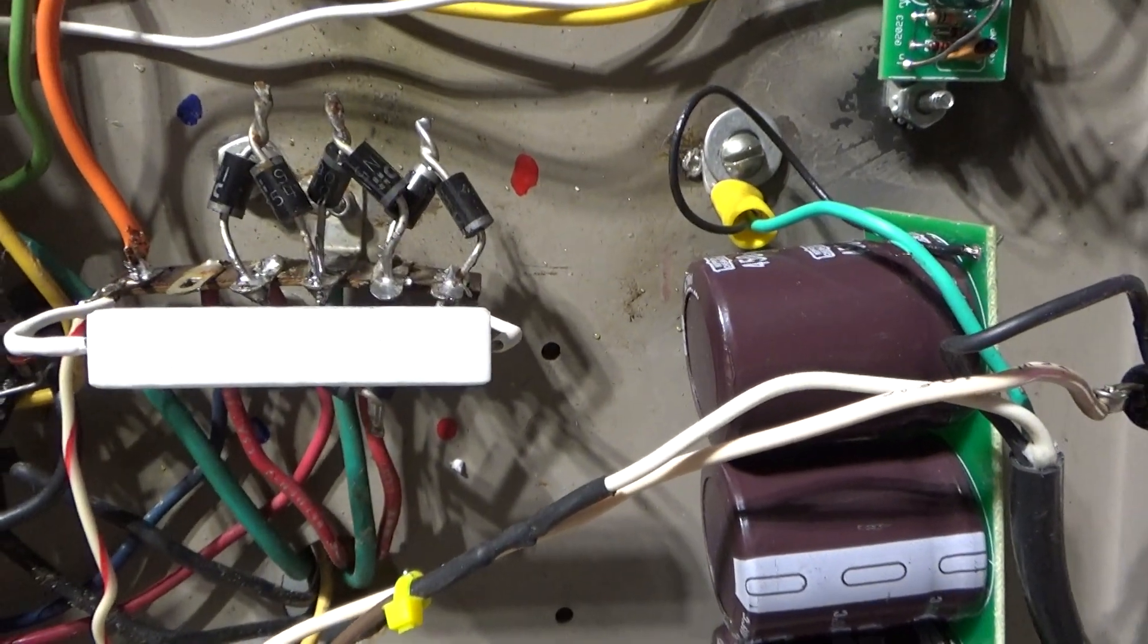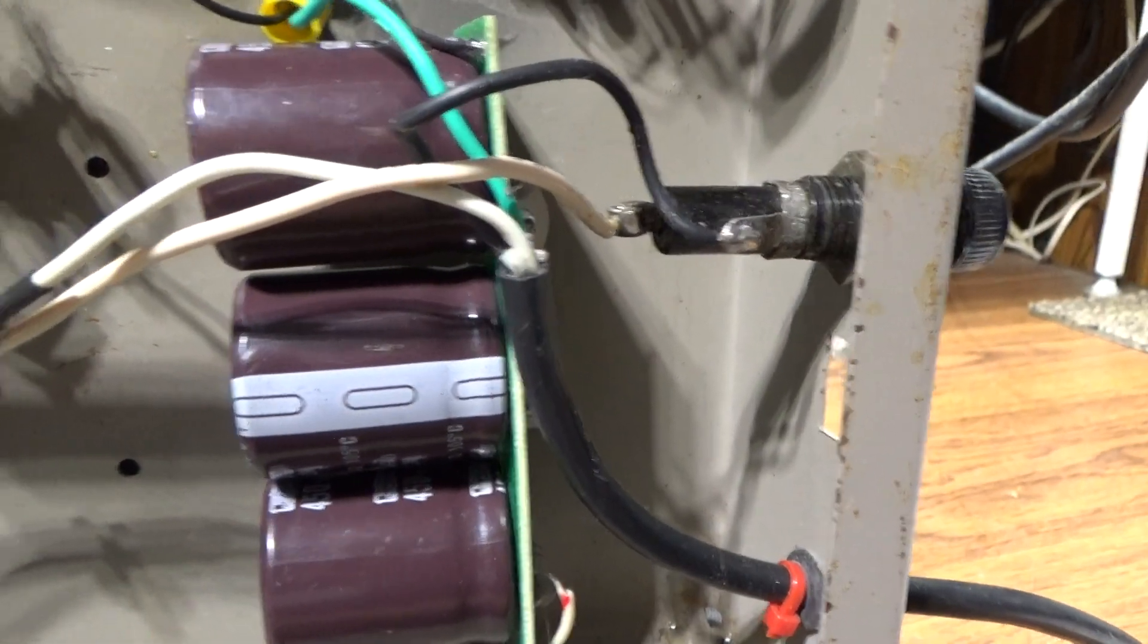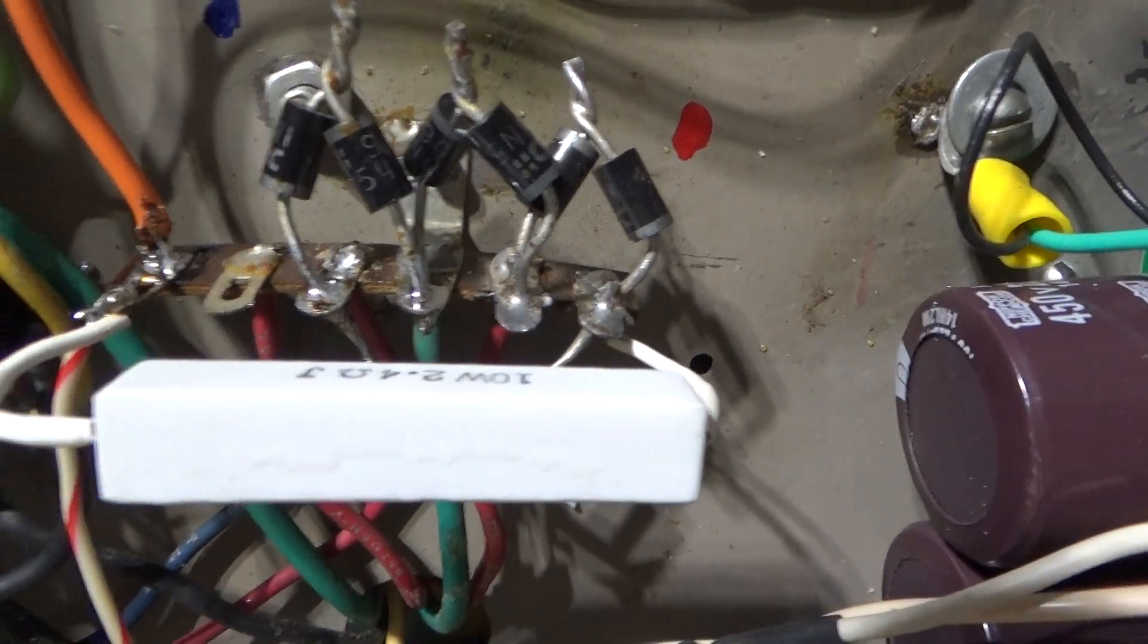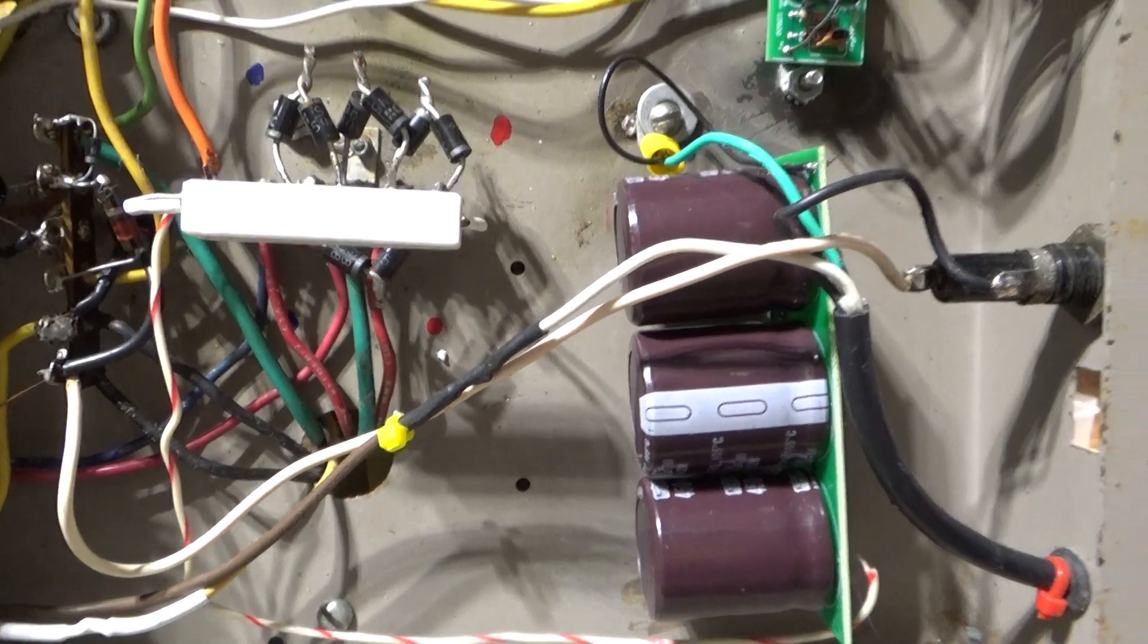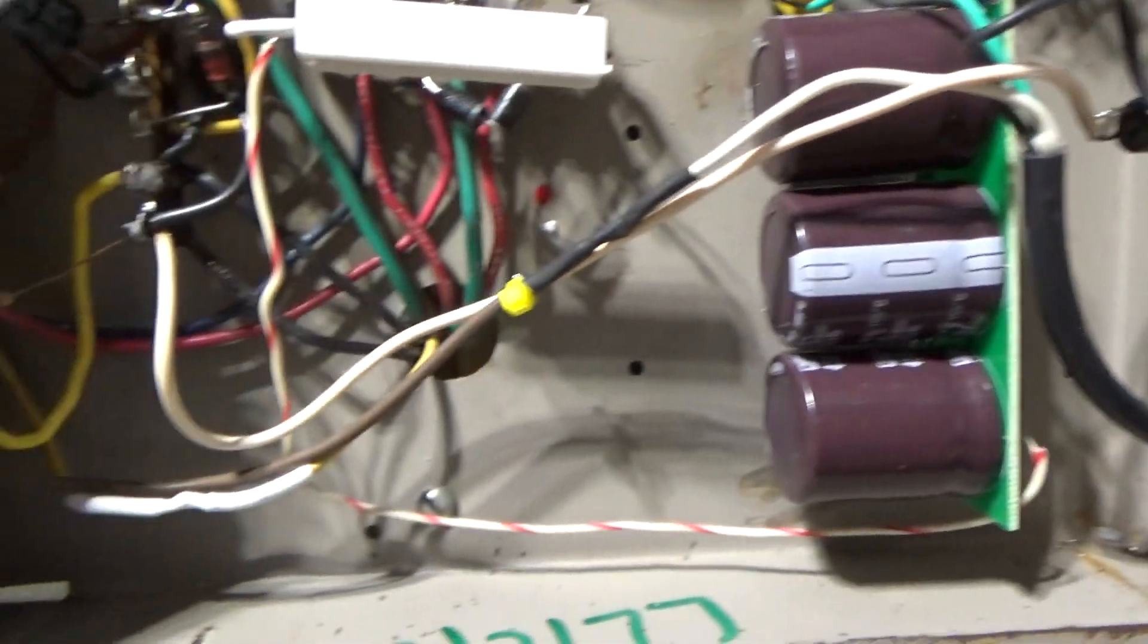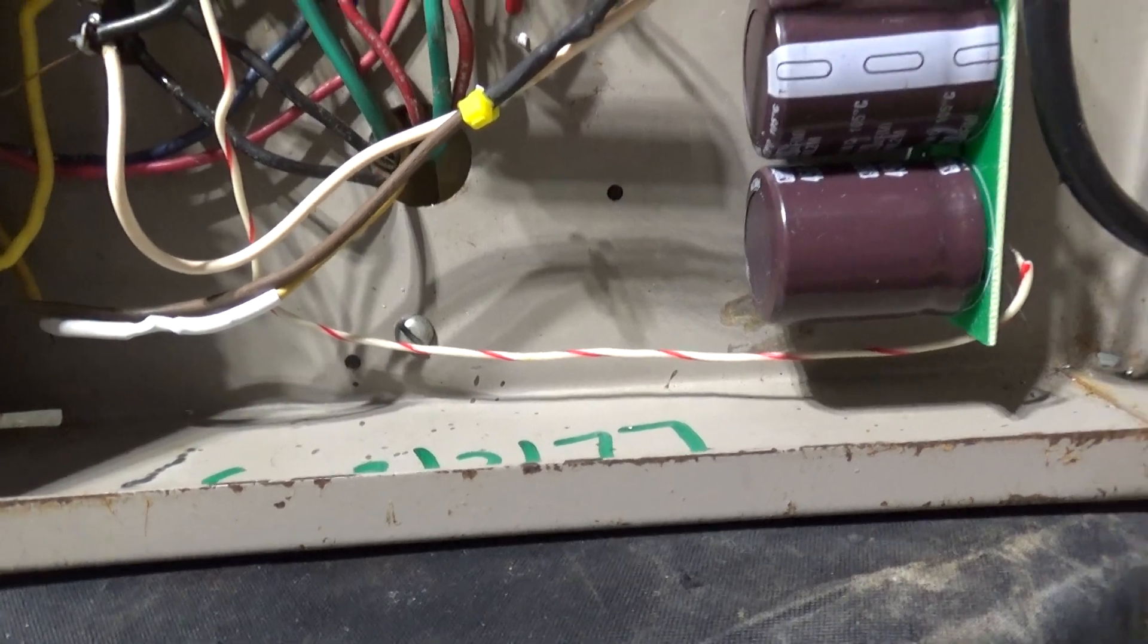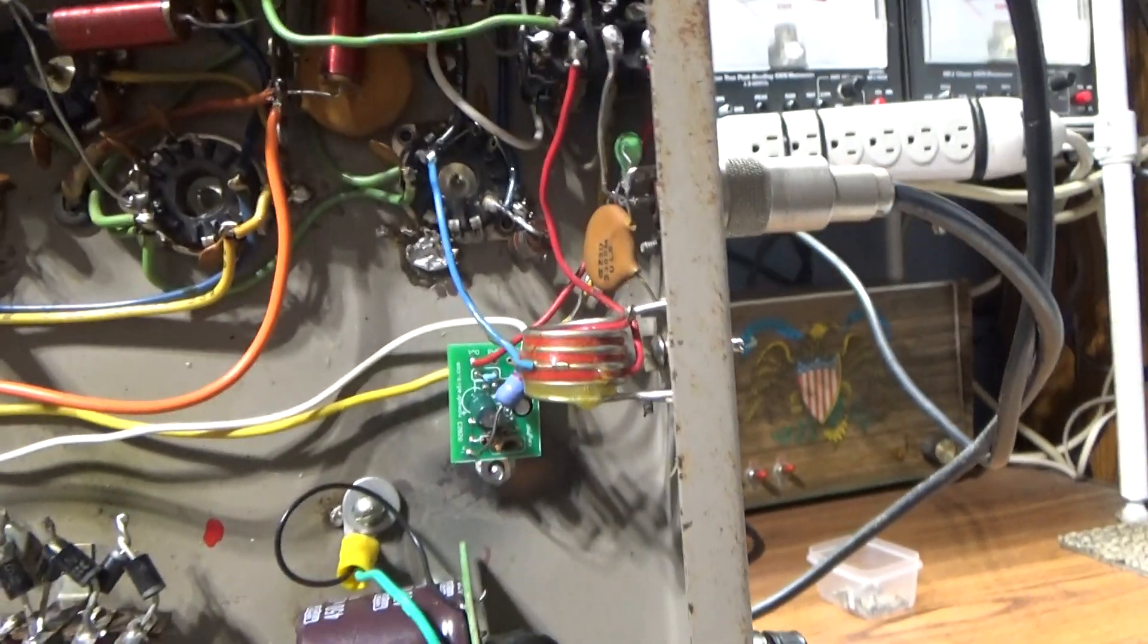Without that surge resistor in there, when you turned it on you could hear the transformer straining while it's trying to charge up the capacitors - grunting and groaning. Once you put that surge resistor in there that was supposed to be in there, it turns on a lot smoother - no grunting and groaning from the transformer. Even though this isn't the best now, you should have seen it before I started. It took quite a bit of work to get this one going.